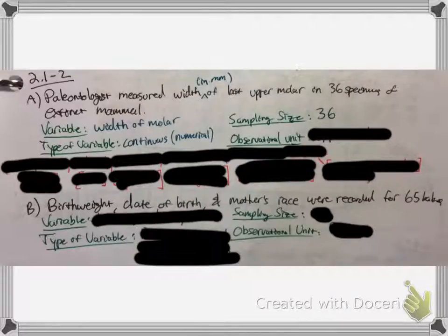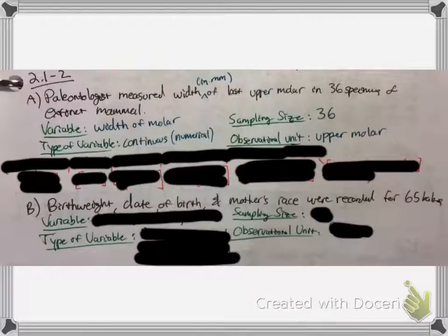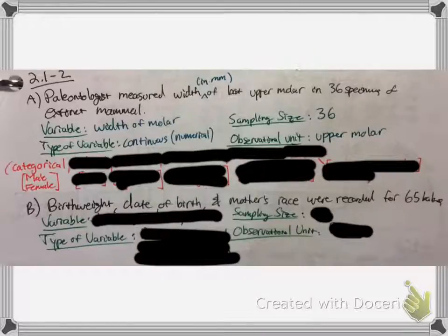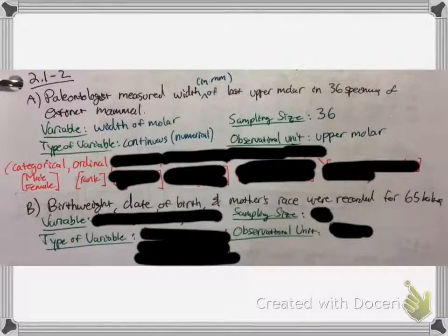What's the observational unit? What's the thing that's being measured? That is the upper molar. So going back to the type of variable: you could have a categorical variable, and that's pretty much just saying there are two categories — you could have male or female. You could also have ordinal, and ordinal means kind of order, so ranking. Then you could have numerical, which is kind of what this one is — it falls in that category, but it's continuous. That could be things like height, weight, money.